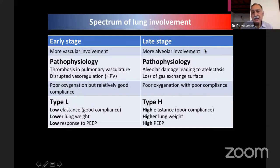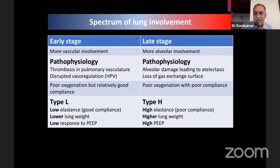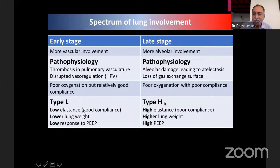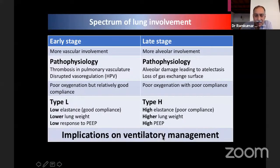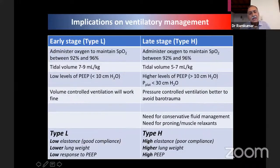Pathophysiology changes in later stages — more alveolar involvement, creating COVID ARDS or CARDS. Alveolar damage leads to atelectasis and loss of gas exchange surfaces. These patients have poor oxygenation and poor compliance — this is Type H, where elastance is high or compliance is very low. Higher lung weight due to extravascular lung water, and high degrees of PEEP are required for treatment.